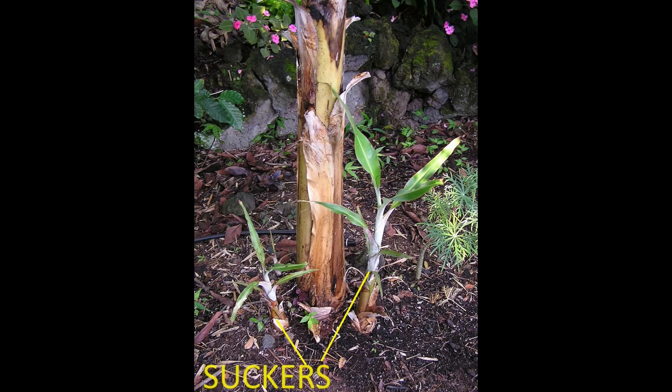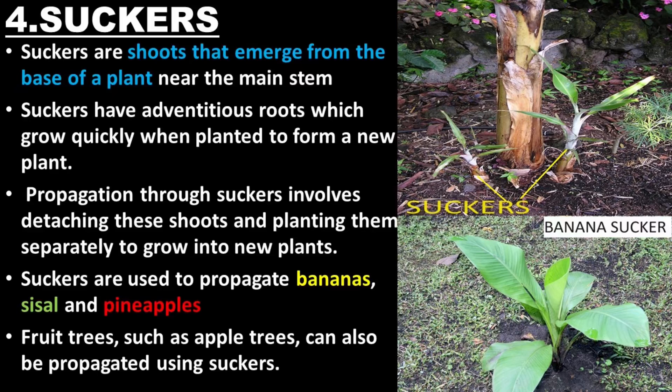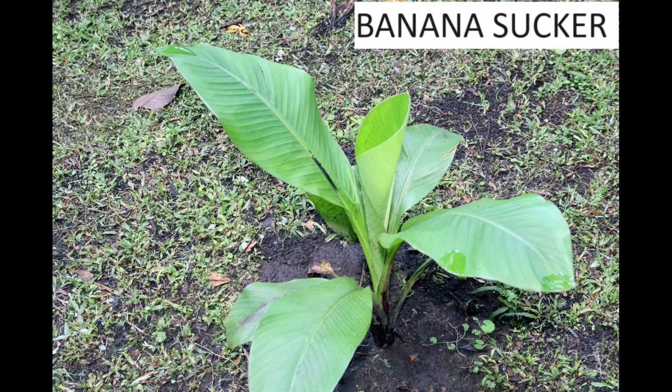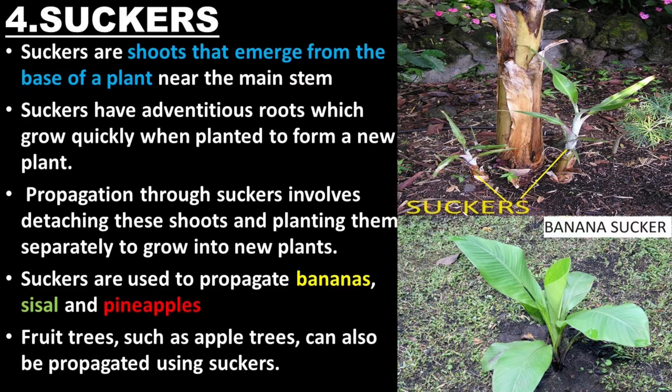Suckers are shoots that emerge from the base of a plant near the main stem. Suckers have adventitious roots which grow quickly when planted to form a new plant. Propagation through suckers involves detaching these shoots and planting them separately to grow into new plants. Suckers are used to propagate bananas, sisal, and pineapples. Fruit trees, such as apple trees, can also be propagated using suckers.